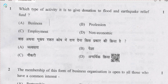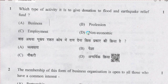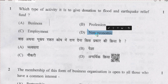So let's begin. Question number 1: which type of activity is to give donation to a flood and earthquake relief fund? The correct answer is option D, non-economic, because people give donations not to earn profit, not for monetary benefit or gain.